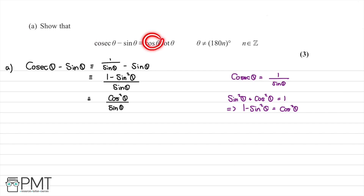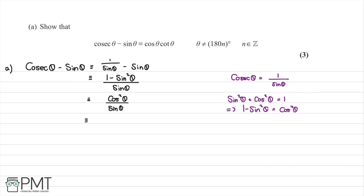We notice we have a cos squared theta term here, so we're going to separate and rewrite it slightly. We can say this is equivalent to cos theta multiplied by cos theta divided by sine theta. We haven't used any new identities here — we've simply split cos squared theta into two individual factors.